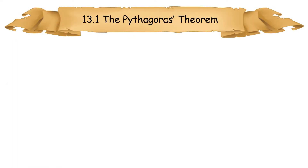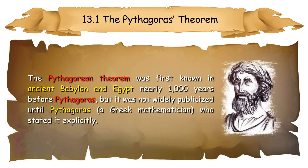13.1 The Pythagoras Theorem. The Pythagorean Theorem was first known in ancient Babylon and Egypt, nearly 1,000 years before Pythagoras. But it was not widely publicized until Pythagoras, a Greek mathematician, who stated it explicitly.